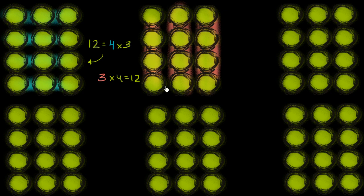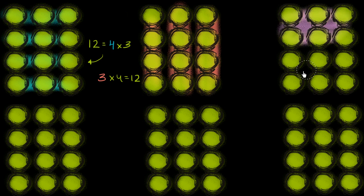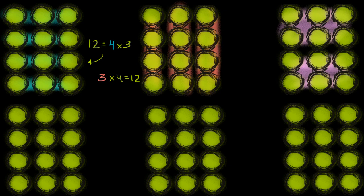But we don't have to stop there. We could also view 12 as 2 groups of 6. Let's look at that. So this is 1 group of 6 right over here. That's another group of 6. So once again, we could view this as 2 times 6. 2 times 6 will also get us to 12.